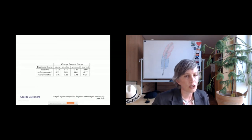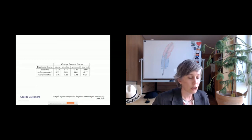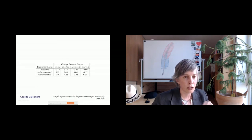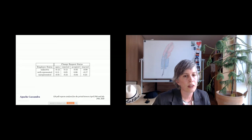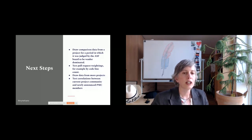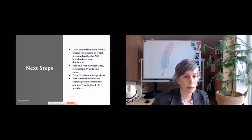What are the next steps? It would be great to draw some comparison data — especially since Apache Cassandra had an incident in 2016 where it was judged by the board to be vendor dominated. It would be good to pull data from that period and compare it to the current period to test this measure. We could also try pull request weightings, for example weighting a pull request by its code line count. Currently one pull request has the same value as any other, whether it's two lines or 200 lines. It would also be great to draw data from more projects, and to test the correlation between the current project community and newly announced PMC members.